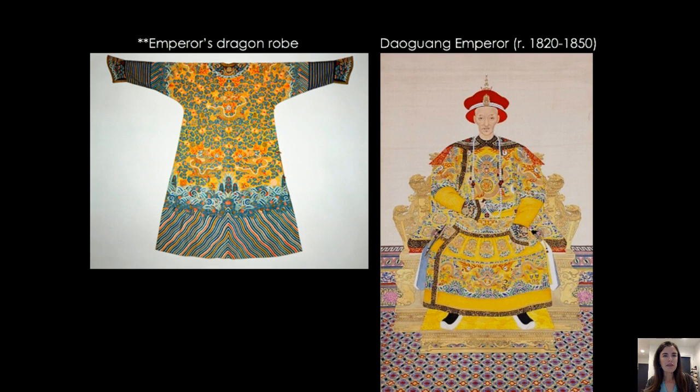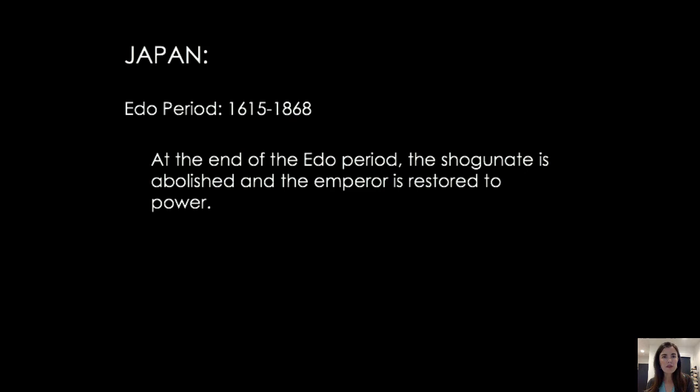Textiles don't necessarily survive very well over time, so we tend to have more textiles from recent dates. The Qing Dynasty has quite a bit of clothing that survives from this period, but the Daoguang Emperor ruled in the 19th century — a much more recent robe than even the Qianlong Emperor's. It's pretty special to have these garments survive, since textiles don't preserve as well as ceramics.